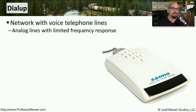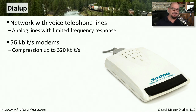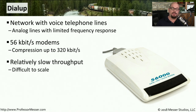Another type of internet connectivity we don't see much any longer are dial-up connections. These use existing analog voice telephone lines to send data communication. You'll commonly see 56 kilobits per second modems, which is significantly slower than a DSL or cable modem connection, although you can compress data to get speeds up to 320 kilobits per second. These speeds are relatively slow, which makes using a dial-up connection difficult to scale, especially if you need to connect many different people to the internet.